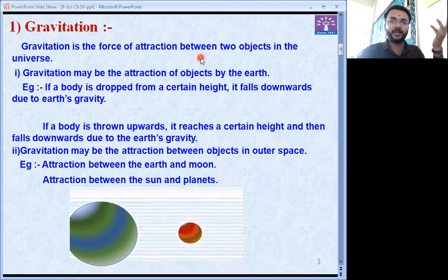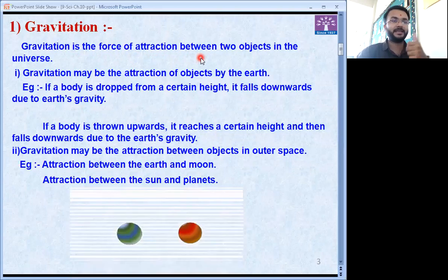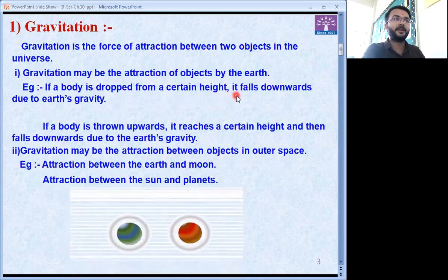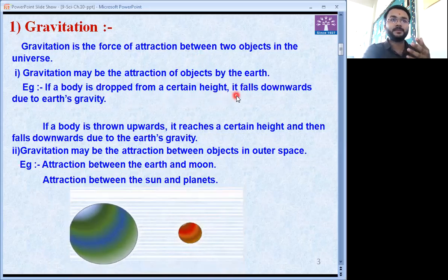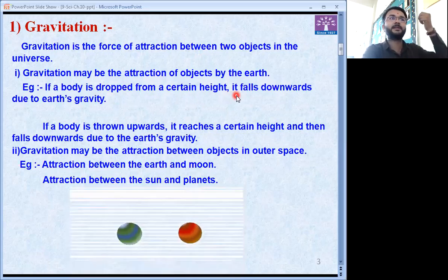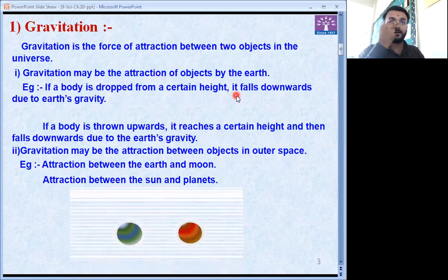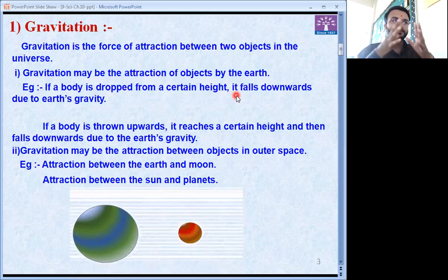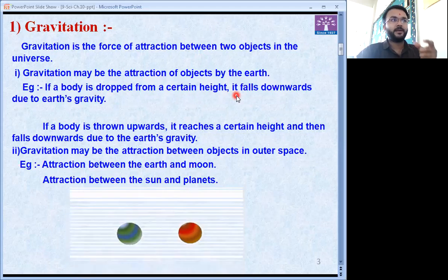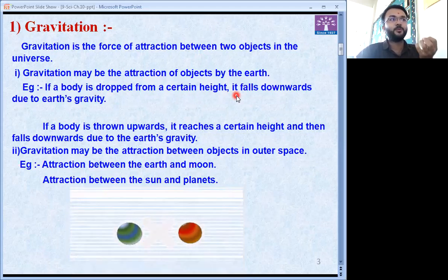Even this is the only force that keeps us on ground. Otherwise, we would be floating as astronauts do in space, because in space there is no gravity. So if a body is dropped from a certain height, why it comes down only? Why doesn't it float automatically or go up? That is due to gravity. Earth is a very huge object. Its mass is very higher than all other objects, and this is the only reason why earth attracts everything towards it.